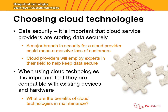There are many factors to consider when choosing cloud technologies. The first is data security — it is crucial that cloud service providers store your data securely so unauthorized users cannot access your files or cause harm to yourself or your customers. In a previous video we looked briefly at how plain text is converted into encrypted ciphertext and, using encryption keys, converted back into plain text. A major security breach for a cloud provider could mean a massive loss of customers — for example, celebrities having their pictures leaked from cloud storage reduces trust in the provider.